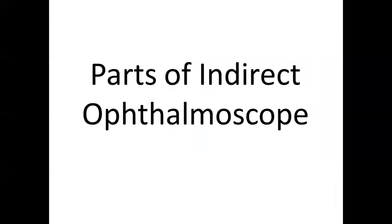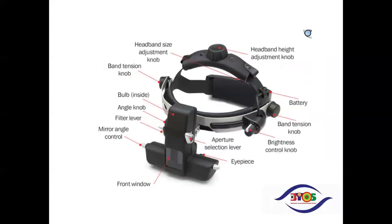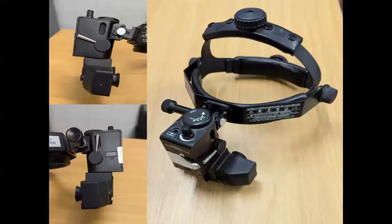Let's talk about parts of indirect ophthalmoscope. In this indirect ophthalmoscope, few things we should know. Number one is the headband. There are two headbands - one is for size adjustment and one for height adjustment. Two levers are important. One is the aperture selection lever, another one is a filter lever. And we have eyepiece and the brightness control knob, which is also known as the rheostat.